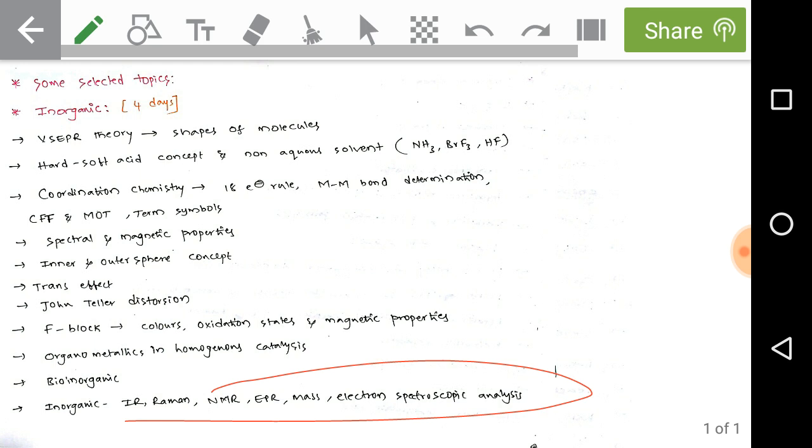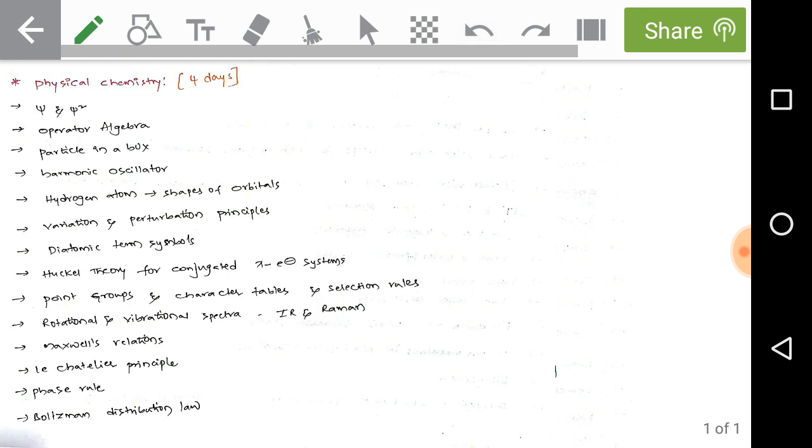Next, physical chemistry: psi and psi square, operator algebra, particle in a box, harmonic oscillator. Here the best one is energy levels. Next, the hydrogen atom. The very important topic of hydrogen atom is shapes of orbitals. Next, variation perturbation principles. Just learn the concepts of variation perturbation principles.